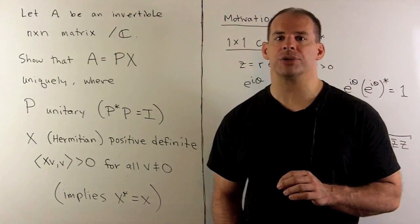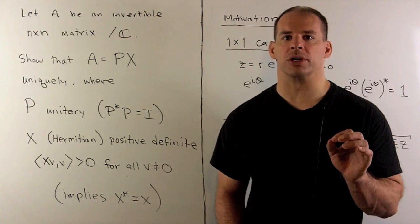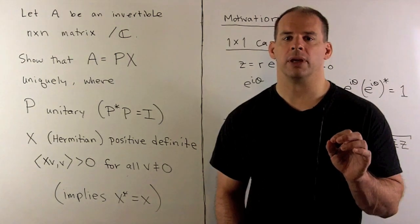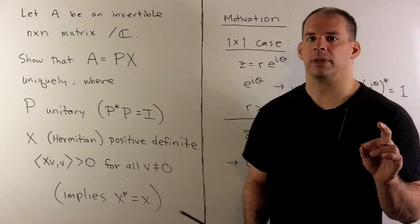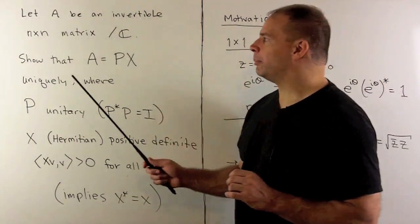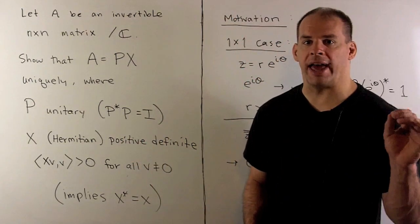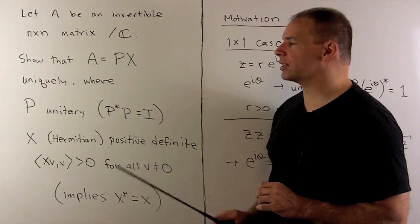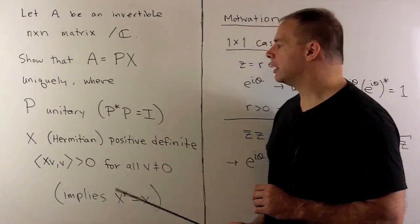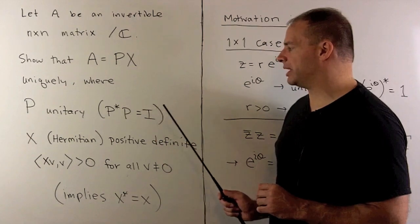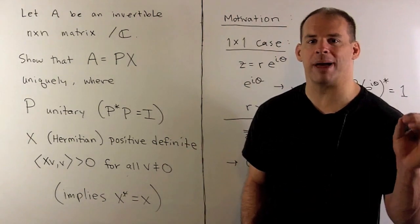If instead we use complex numbers, we just need to replace the orthogonal matrix with a unitary matrix. Our factorization here will be a little bit different. We'll let A be an invertible n-by-n matrix over the complex numbers, and we want to show that we can write A as P times X uniquely, where P is unitary — so P conjugate transpose times P is the identity matrix — and X is Hermitian positive definite.